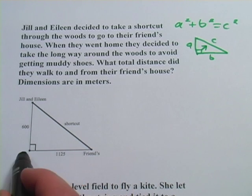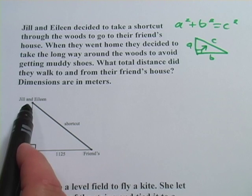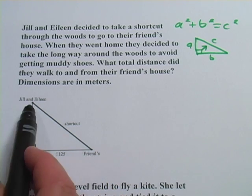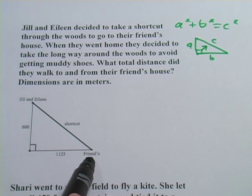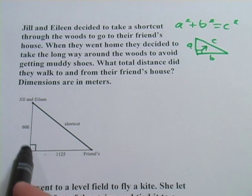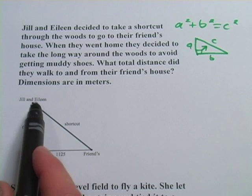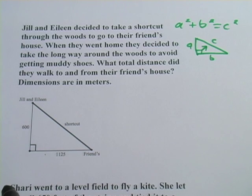So maybe this is the long way here, right? So here's Jill and Eileen's house, there's the friend's house. They took the shortcut on the way there through the woods, so you're taking a straight line, and then they walked the long way maybe down one street and then up another street to get there. And the question is, what distance did they walk to and from their friend's house?